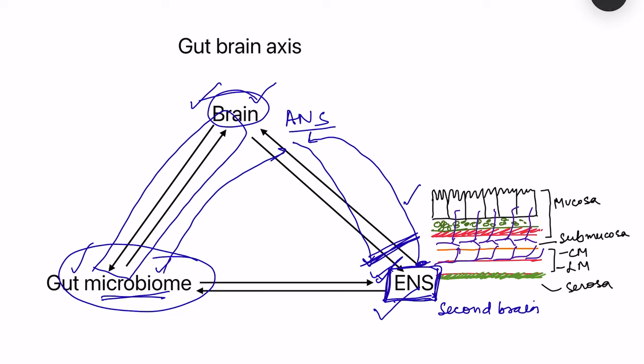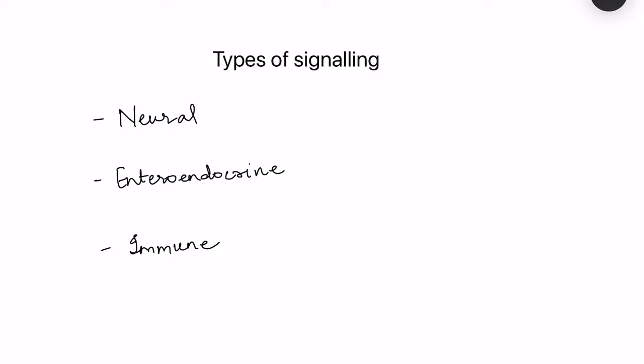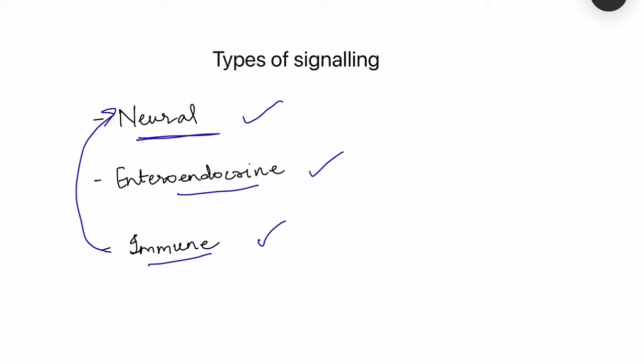The interactions between the brain, enteric nervous system, and gut microbiome are of three types of signaling: neural signaling, which involves connections between neurons; enteroendocrine signaling, where enteroendocrine cells in the GI tract produce substances that affect the brain; and immune signaling, where the gut affects immune cells within the gut which in turn affects neural signaling.